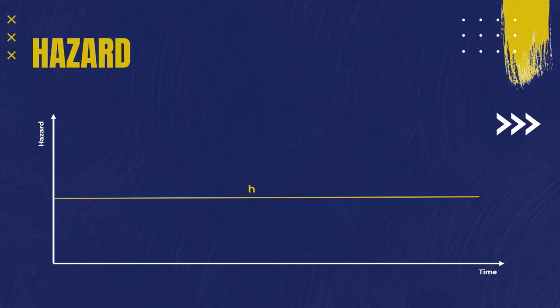The hazard has different patterns. One of the patterns is having a constant hazard, which means that the hazard of failure doesn't change over time, meaning we have a constant failure rate. This is the case we discussed earlier in our last lecture where lambda equals 1 over mean time between failure.